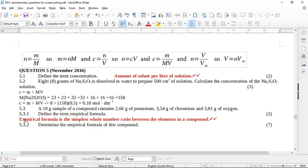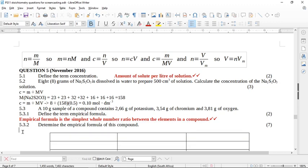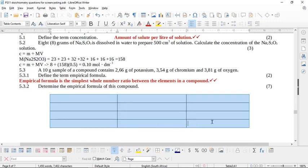Now it says to you, a 10 gram sample of a compound contains 2.66 grams of potassium, 3.54 grams of chromium, and 3.81 grams of oxygen. Define the term empirical formula. Empirical formula is the simplest whole number ratio between the elements in the compound. Determine the empirical formula of this compound. Now you might note that this question's got absolutely nothing to do with the other half of the question, but it's fine. We can figure out this empirical formula for seven marks without a problem.